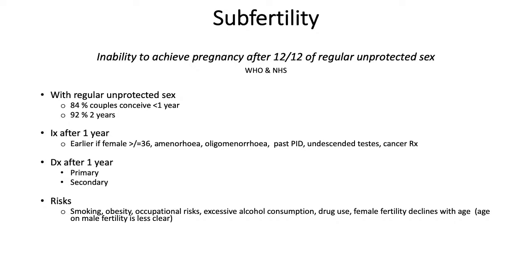Diagnosis is normally after a year and it can be primary or secondary. Primary is where neither partner has conceived previously and is now having difficulties, whereas secondary is where one partner has previously conceived but they're now having difficulties. There are some generic risks: smoking, obesity, occupational risks like chefs with overheating, excessive alcohol consumption, drug use, and female fertility generally declines with age. Evidence is still to be shown for males whether it decreases with age.